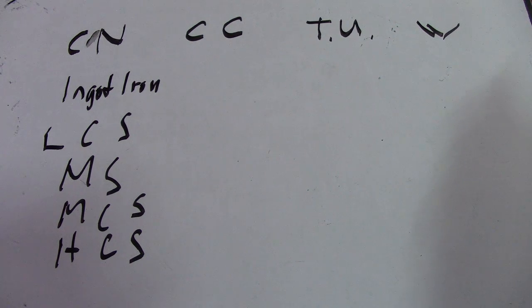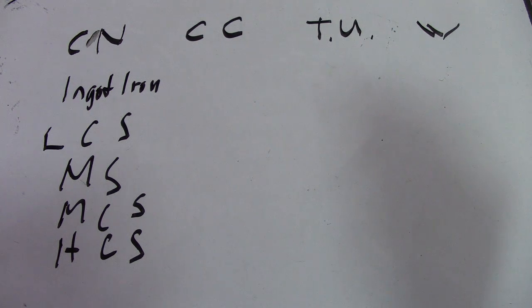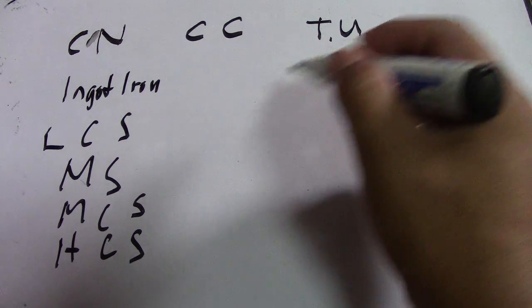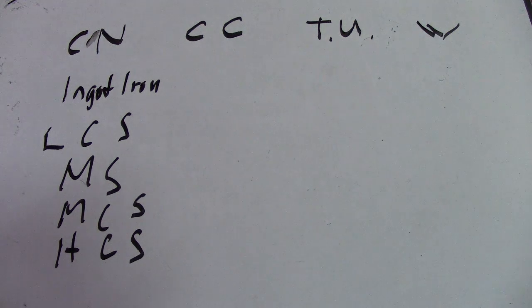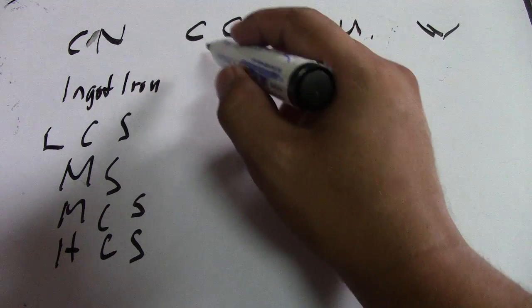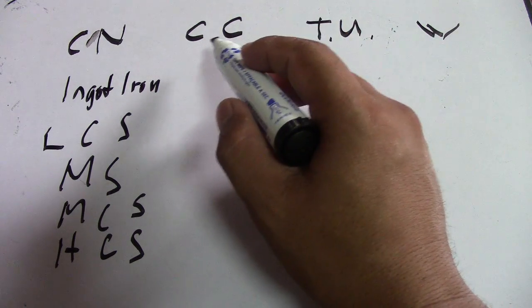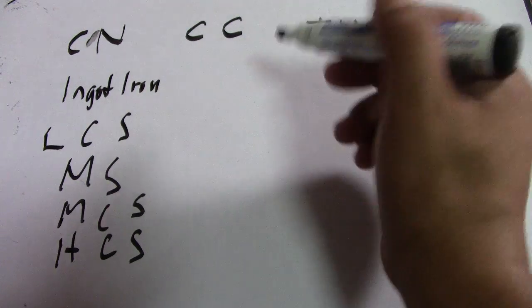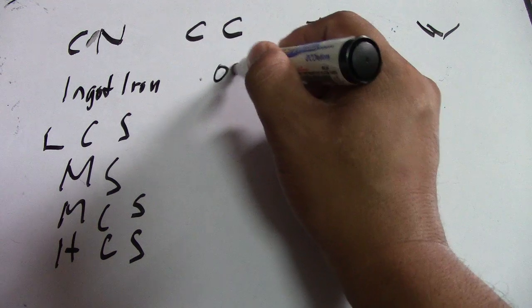Now, the carbon content for each type is important to know. For ingot iron, the carbon content is 0.03 percent.